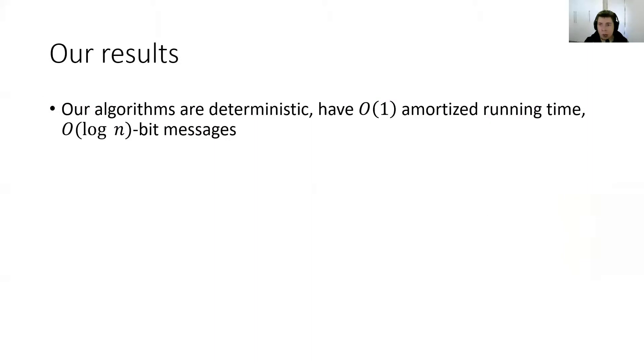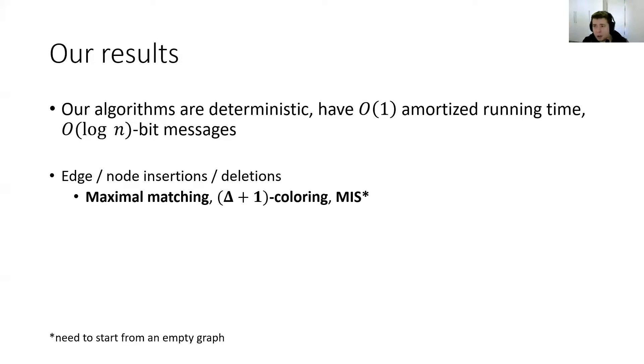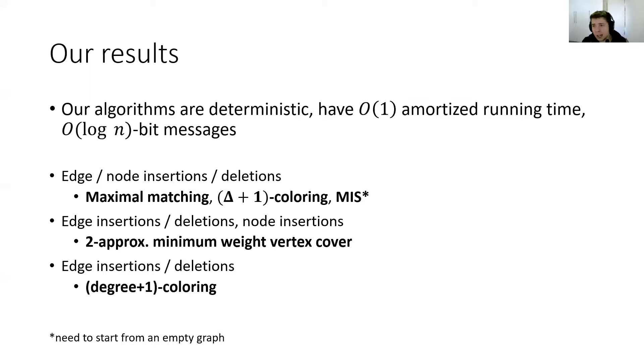We also have a subsequent work in this model where we study listing subgraphs. Now moving to our results, we obtain algorithms which are deterministic, have O of 1 amortized running time and use only O of log n bit messages. If you consider either edge or node insertions and deletions as a single topology change, then our amortization work for maximal matching, delta plus one coloring or MIS—with the caveat that for MIS, we need to start from an empty graph for the amortization to work, and for all other problems you consider, you can start from some graph and any valid solution. If you consider node deletions as a single topology change, then we can also deal with two approximations of minimum weight vertex cover. If you only consider edge insertions and deletions as a single topology change, then we can also deal with degree plus one coloring.